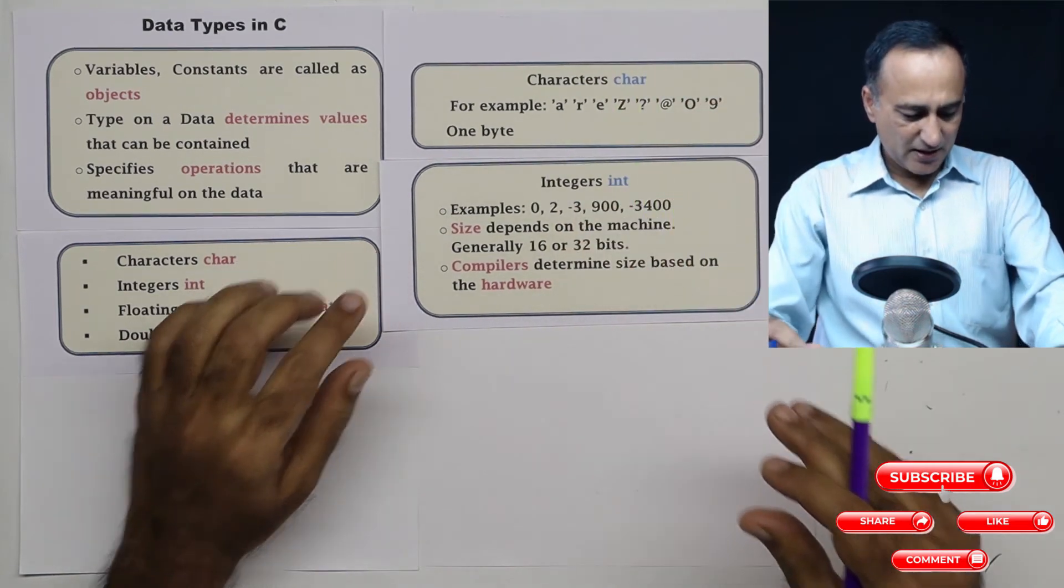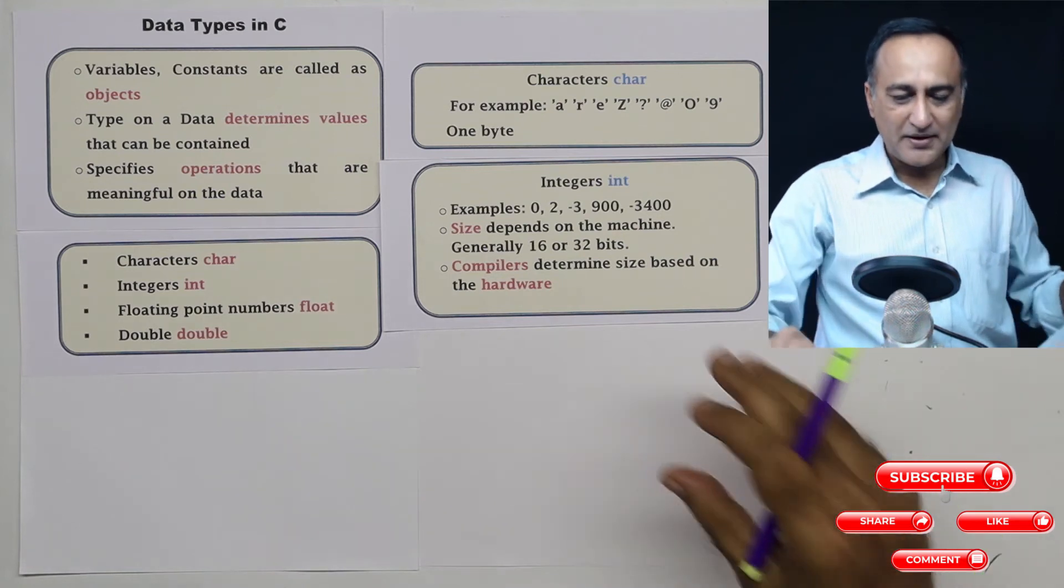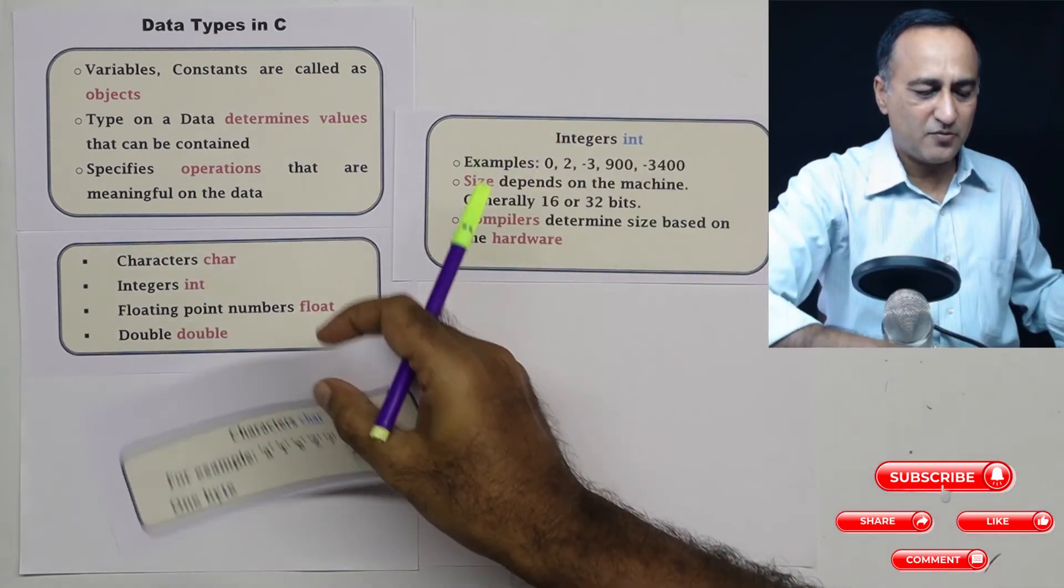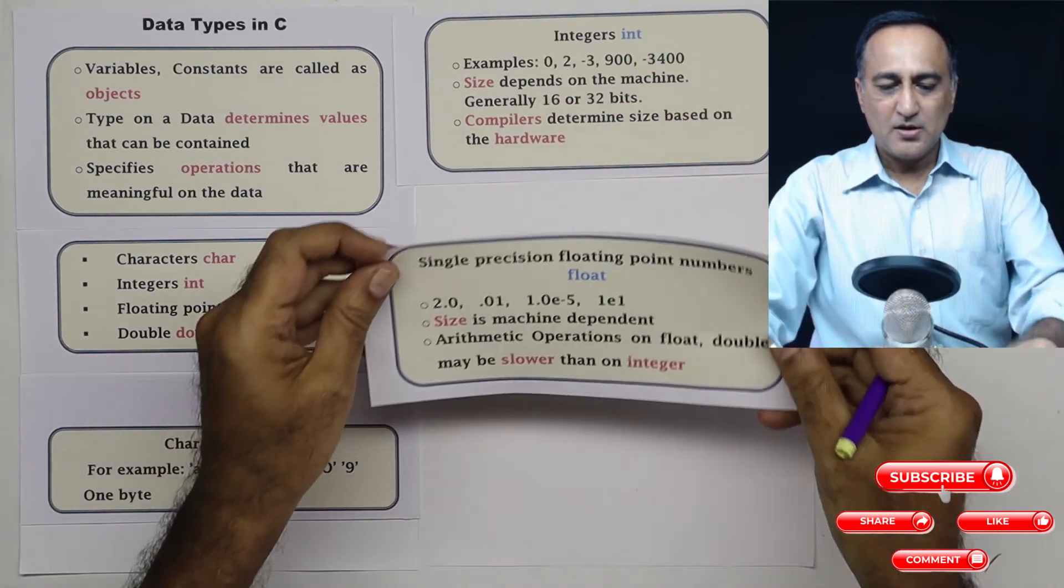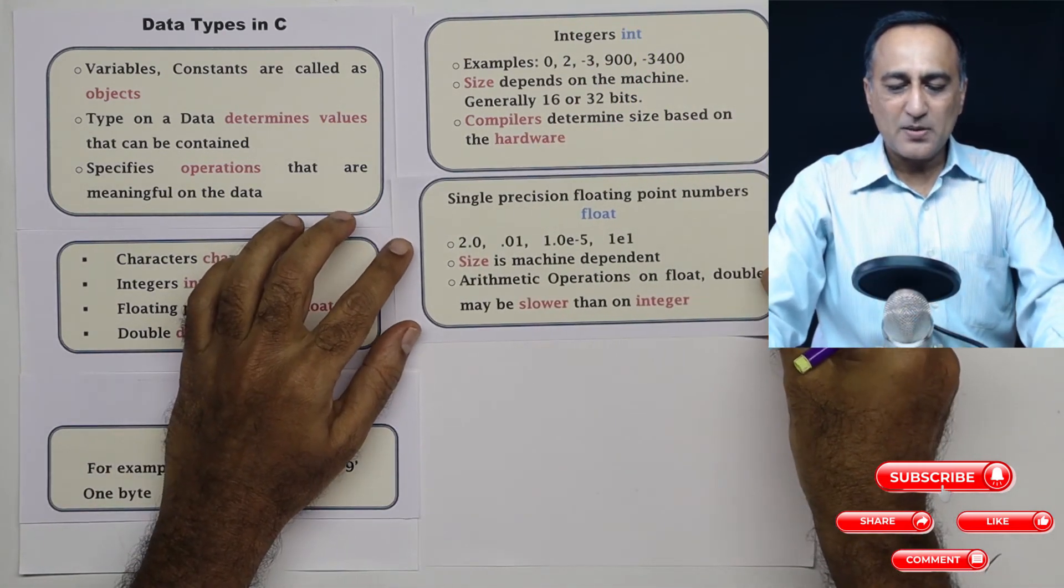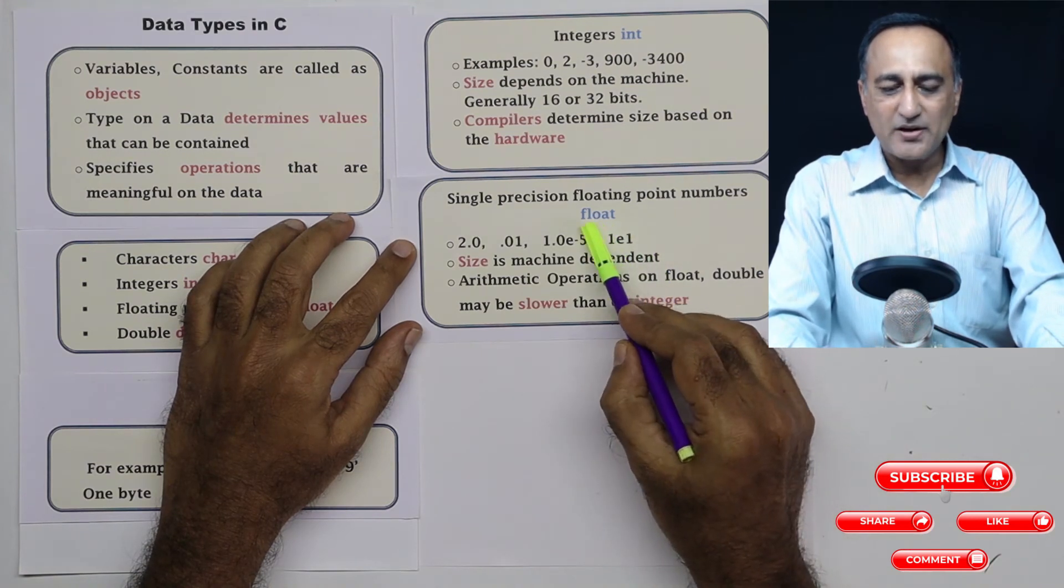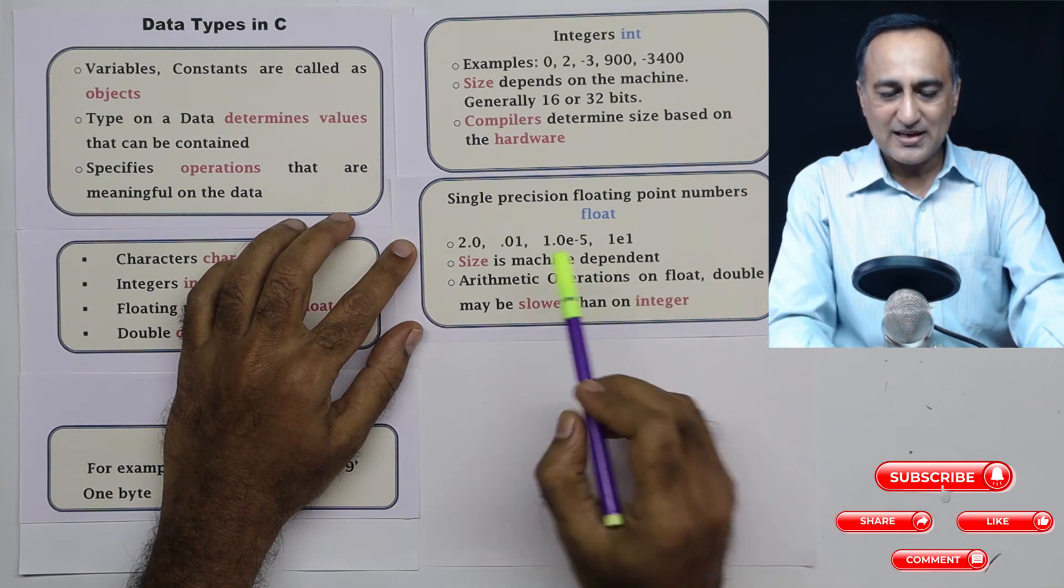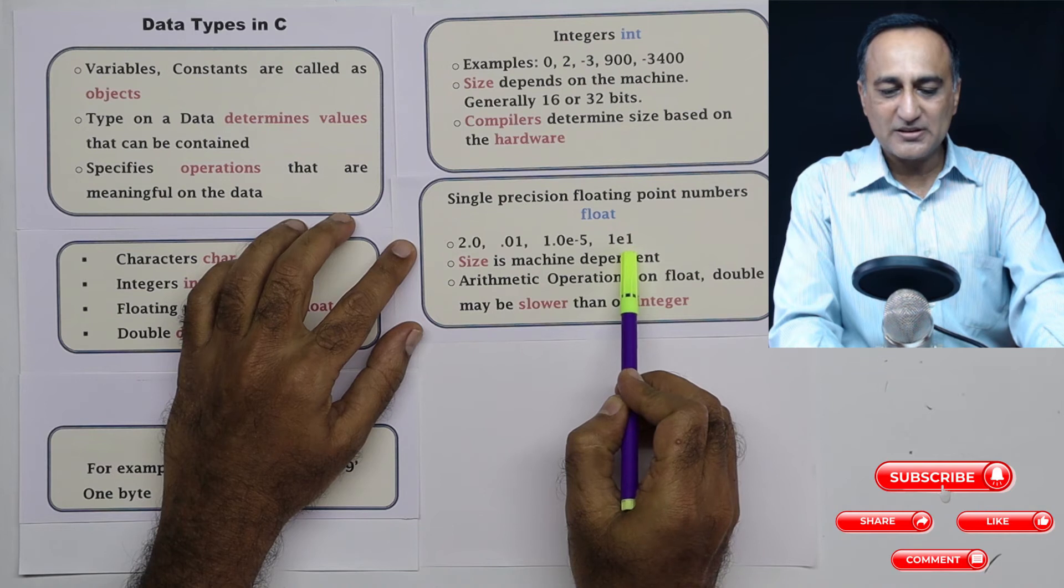The next data type is the single precision floating point number, declared with the keyword float in C. Everything is in lower case. These are all examples of floating type of variables. The size is machine dependent.